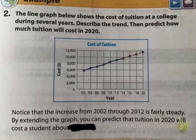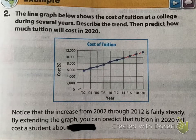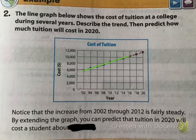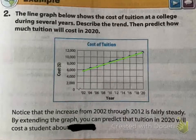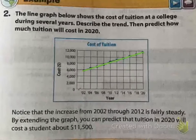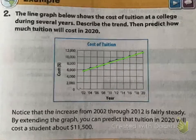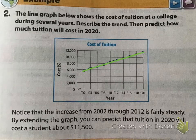The line graph below shows the cost of tuition at a college during several years. Describe the trend, then predict how much tuition will cost in 2020. As we can see, the cost is increasing in a pretty much straight line. So by 2020 it's going to be approximately $11,500 to $12,000. That is a joke — college costs way more than that.